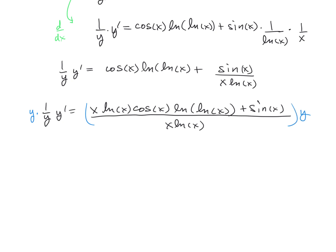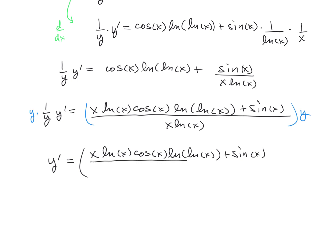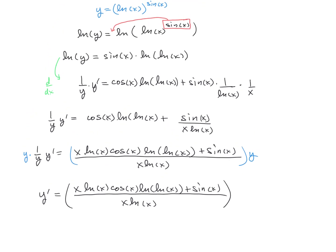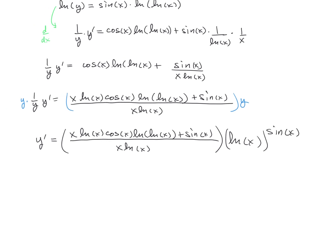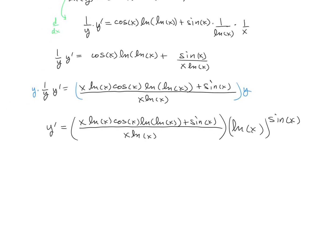And we're almost finished, because now we can multiply both sides by y. We can then replace y with what it represented. So we're going to have this large coefficient function — x ln x times cosine of x times the natural log of the natural log of x, plus the sine of x, over x times the natural log of x — times our original y, which was the natural log of x raised to the sine of x. And that right there is the derivative of our function.